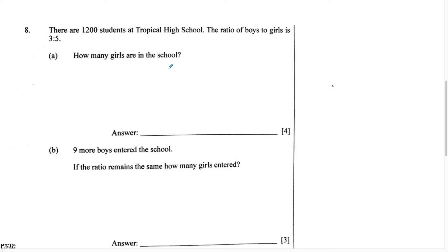Well, if we look at this problem, we can see it is a ratio problem. The way we know it's a ratio problem is because it tells us it's a ratio problem — this word right here is all we needed to see in order to know how to solve this problem. Now we should remember that a ratio is used to compare two or more things. In this situation, we're comparing boys to girls.